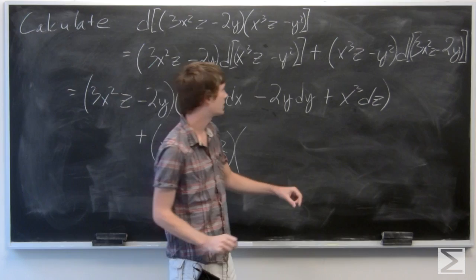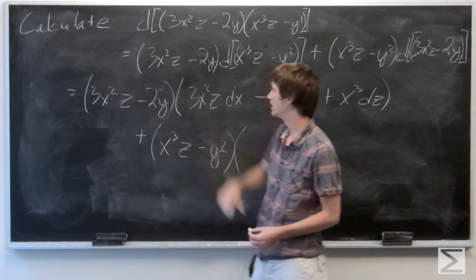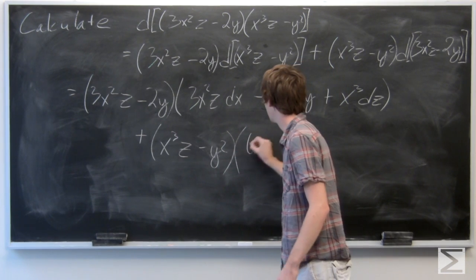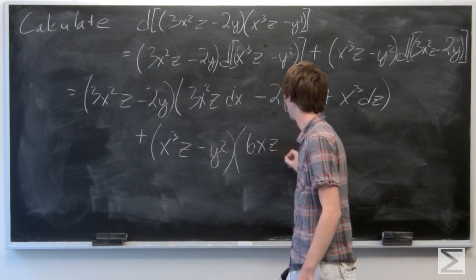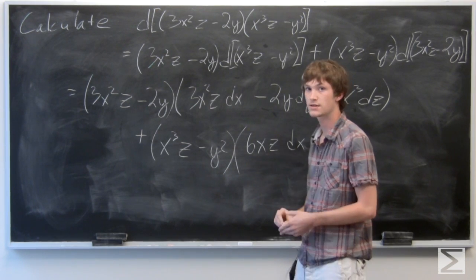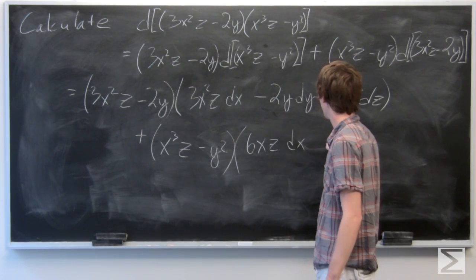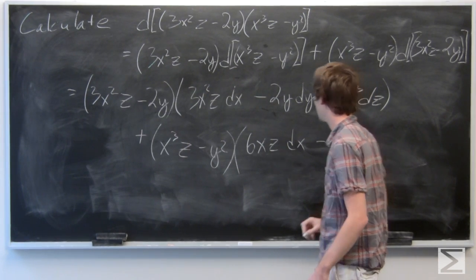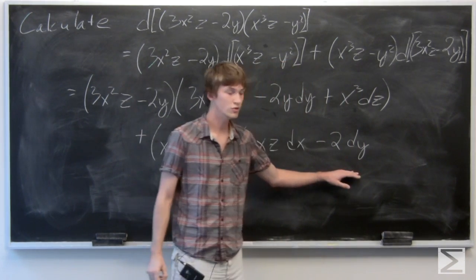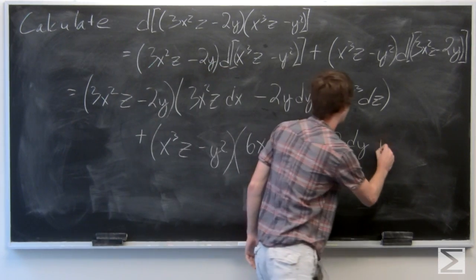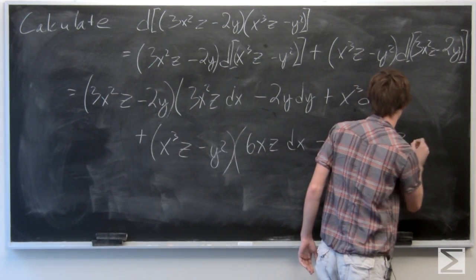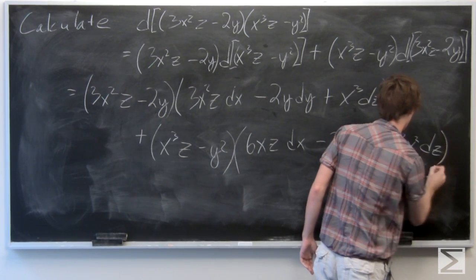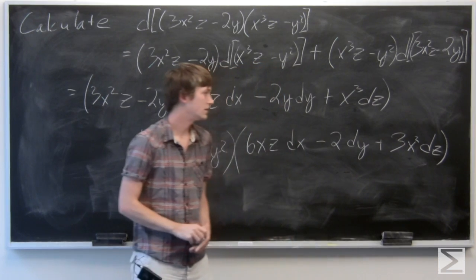And then we're going to take the differential of the first term. The first term is 6xz dx minus 2 dy and 3x² dz.